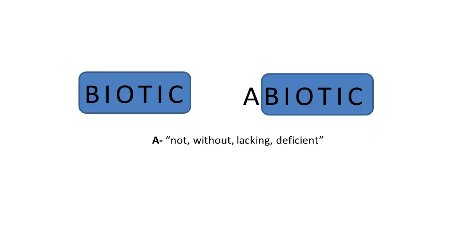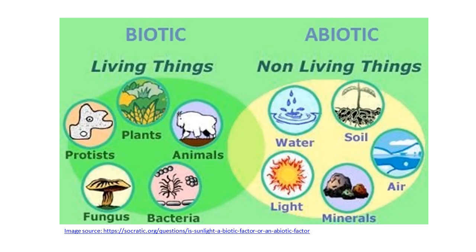We have the root word biotic, and we have the term abiotic. So we have the prefix A, which means not, without, lacking, or deficient. Abiotic means without life, while biotic refers to living things. Abiotic refers to non-living things.